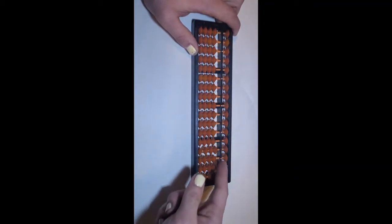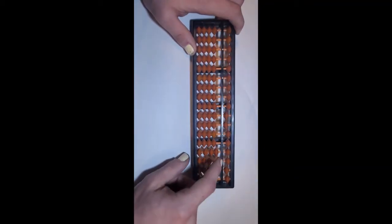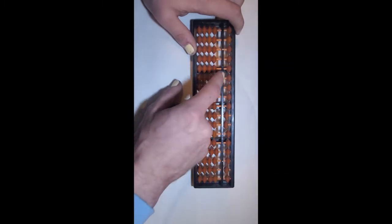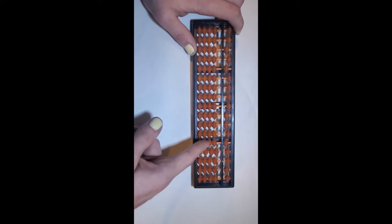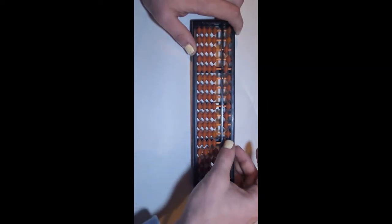This middle piece is called the cross piece, with dots to indicate the decimal points. And these bars, these vertical bars, are called the uprights, and they house the beads, of course.